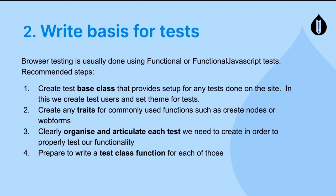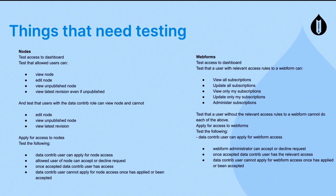In the base class, we create our test users — in this case the data contributor and the data owner — and set the theme for the tests. Then we create traits for commonly used functions such as creating nodes or web forms. We clearly organize and articulate each test we need to create in order to properly test our functionality, then prepare to write a test class function for each.